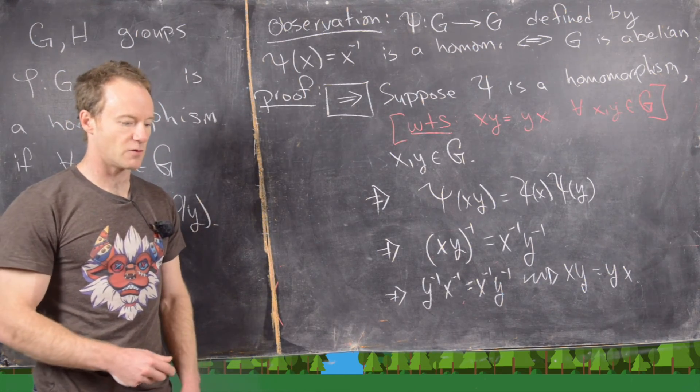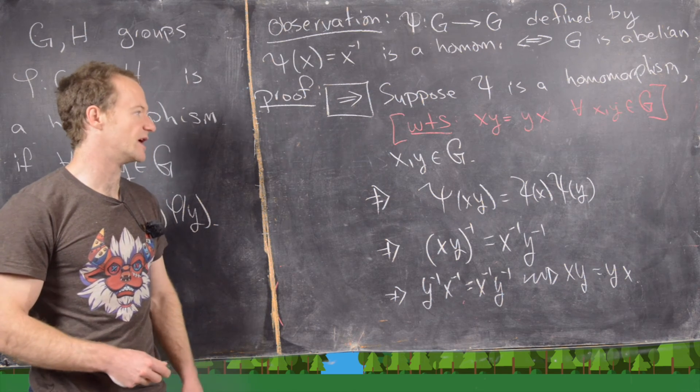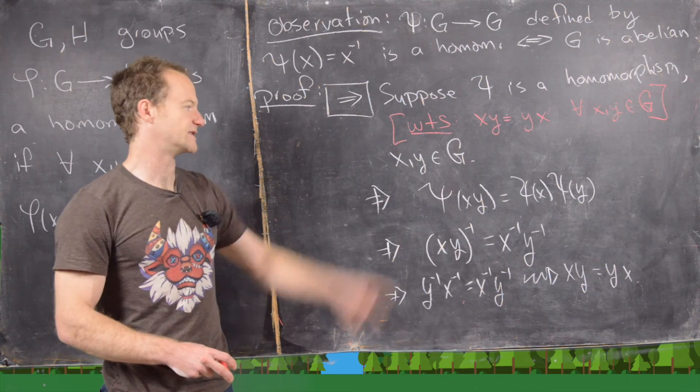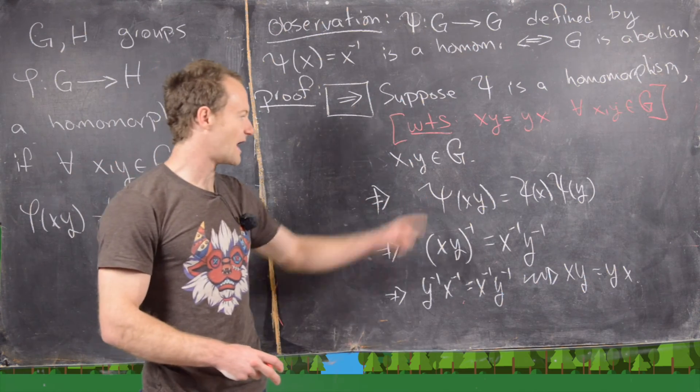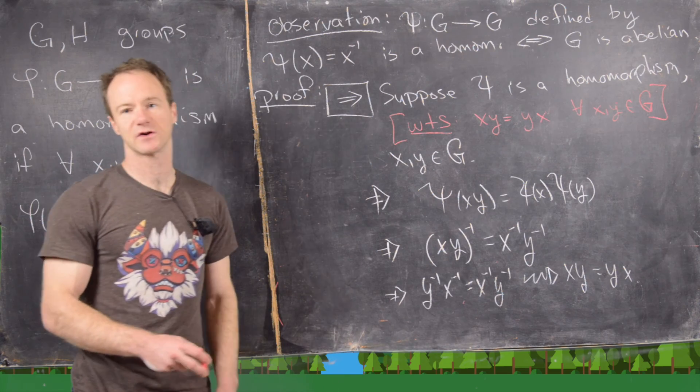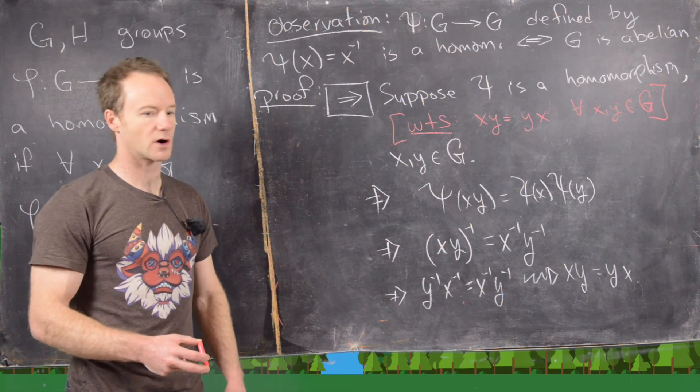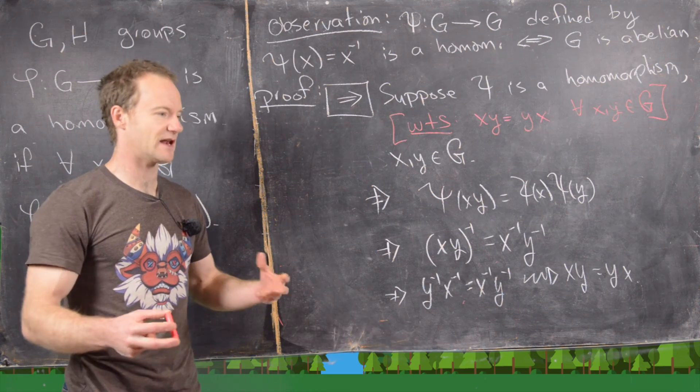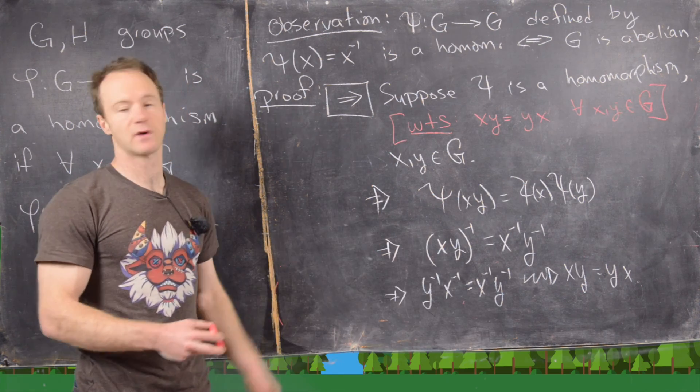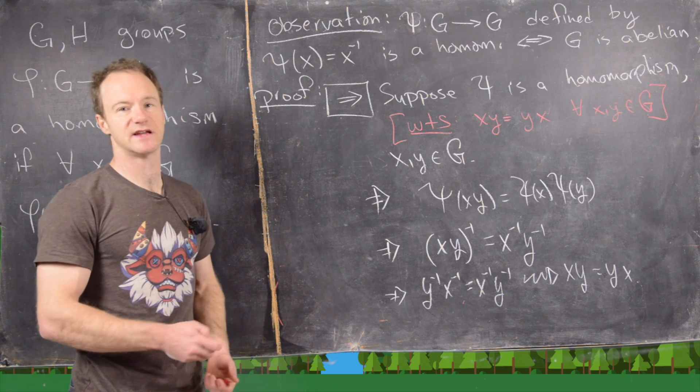Now, could you do this in a little more elegant way? And yes, you could. And that is you could start up here with xy is in G and then apply the fact that psi is a homomorphism to the element x inverse y inverse. That might be a little bit more elegant and shorter to write at the end, but this works as well. So this is a good place to end this video.